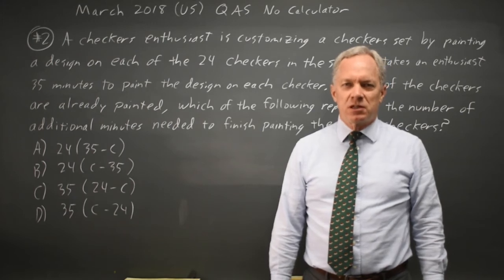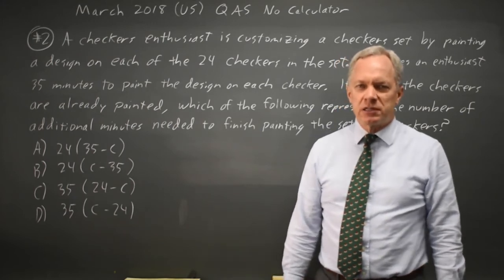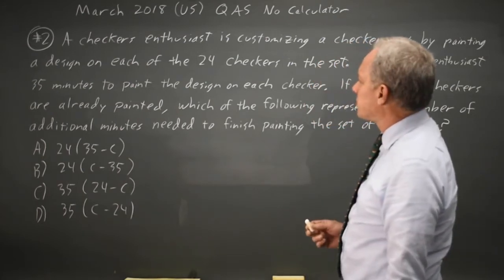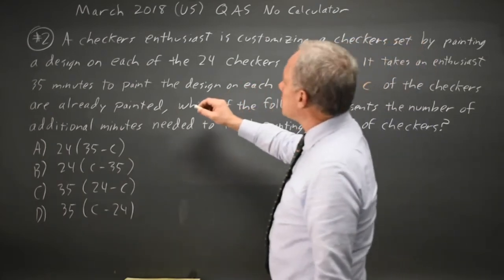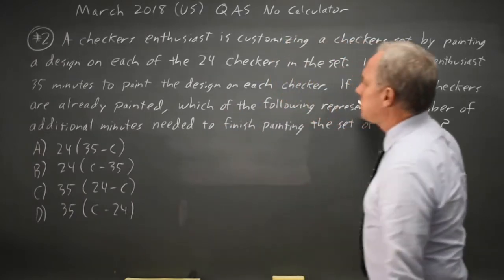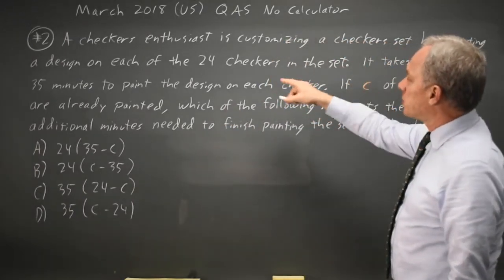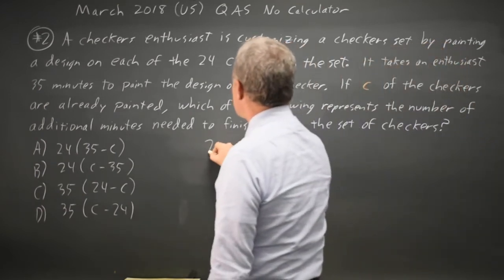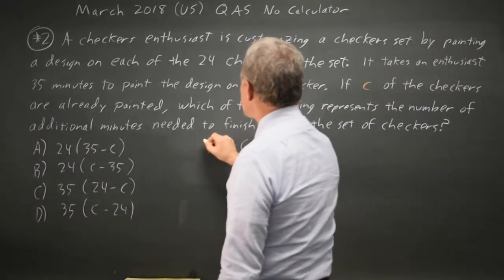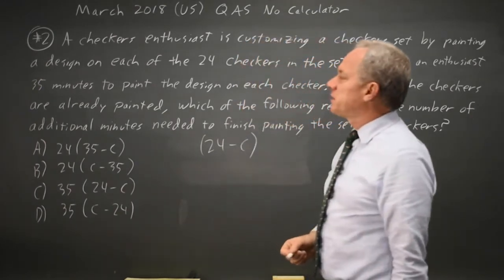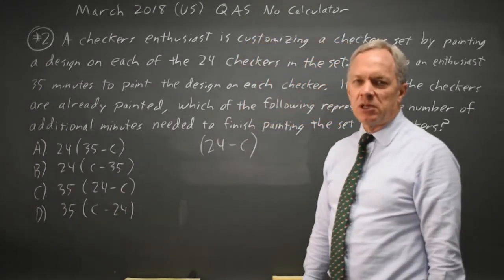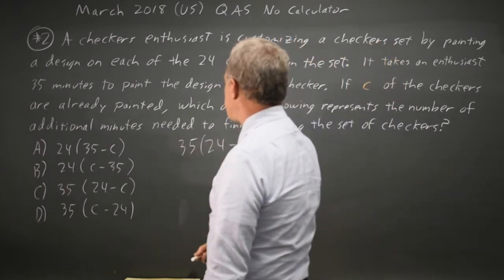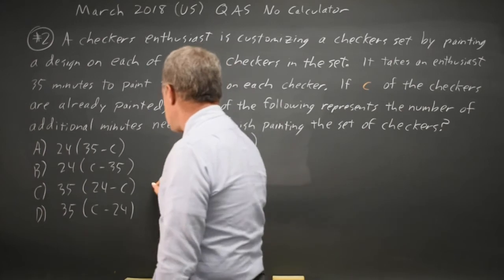This is question two. The College Board is asking us for an expression for the amount of time to finish painting a set of checkers. We've already painted C checkers out of 24 checkers, so the number of checkers remaining is 24 minus C. It takes 35 minutes for each checker, so the total time will be 35 times the number of checkers remaining, which is choice C.